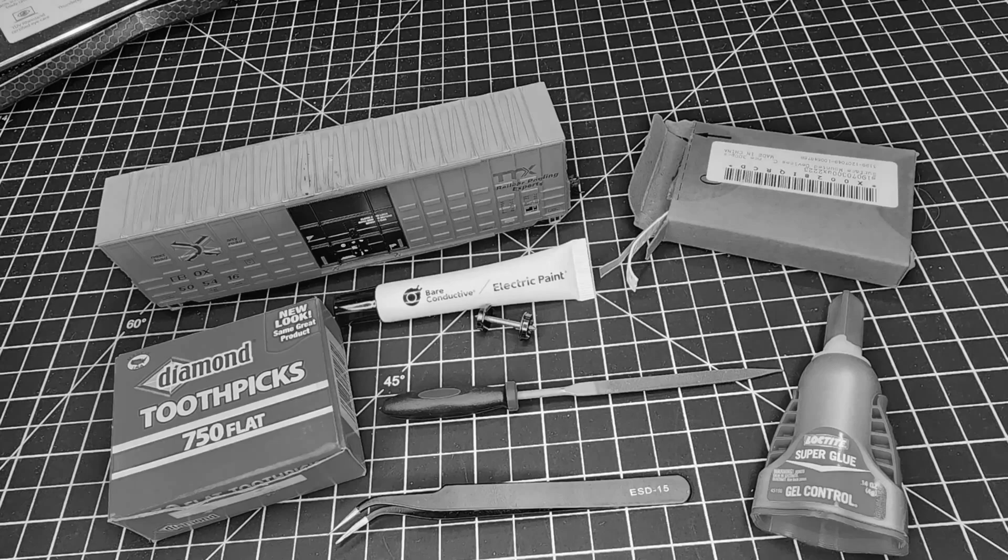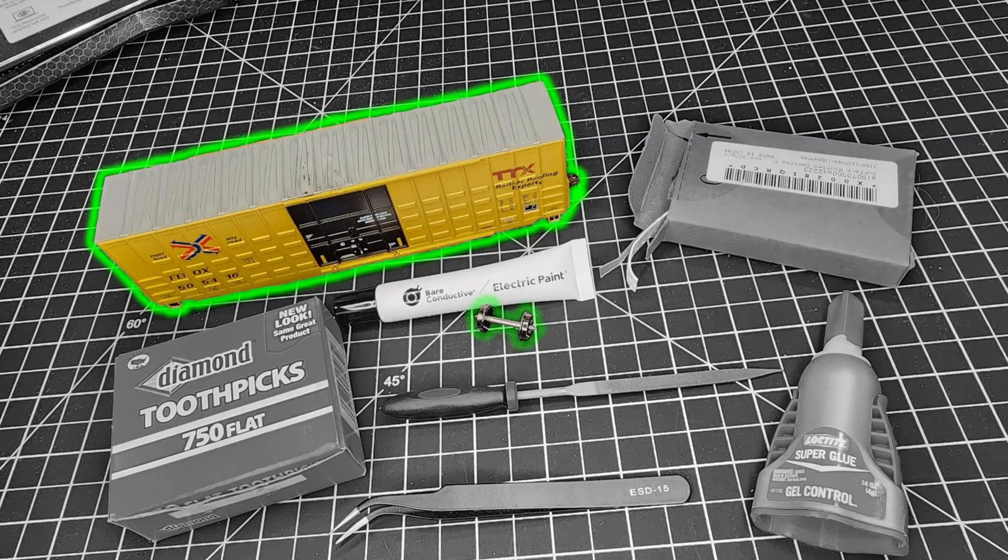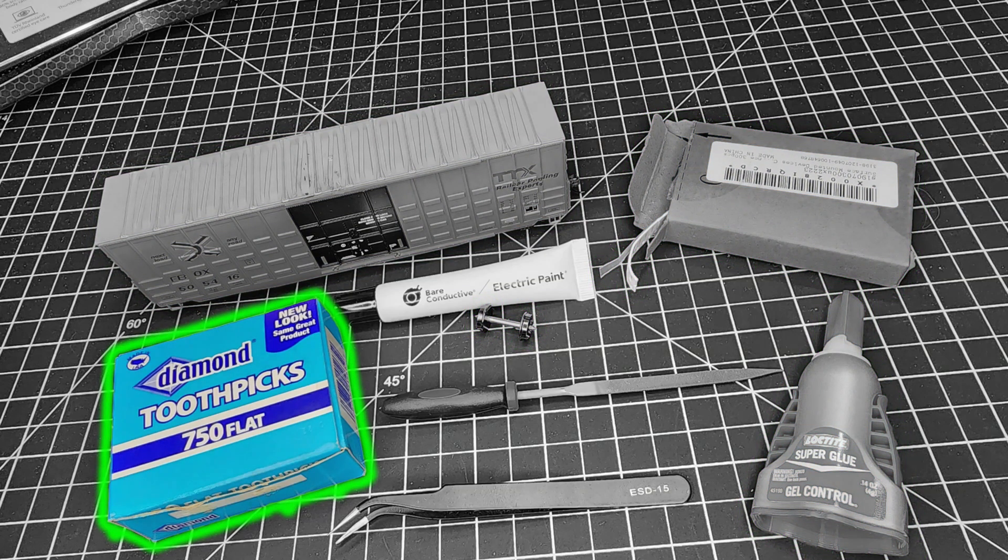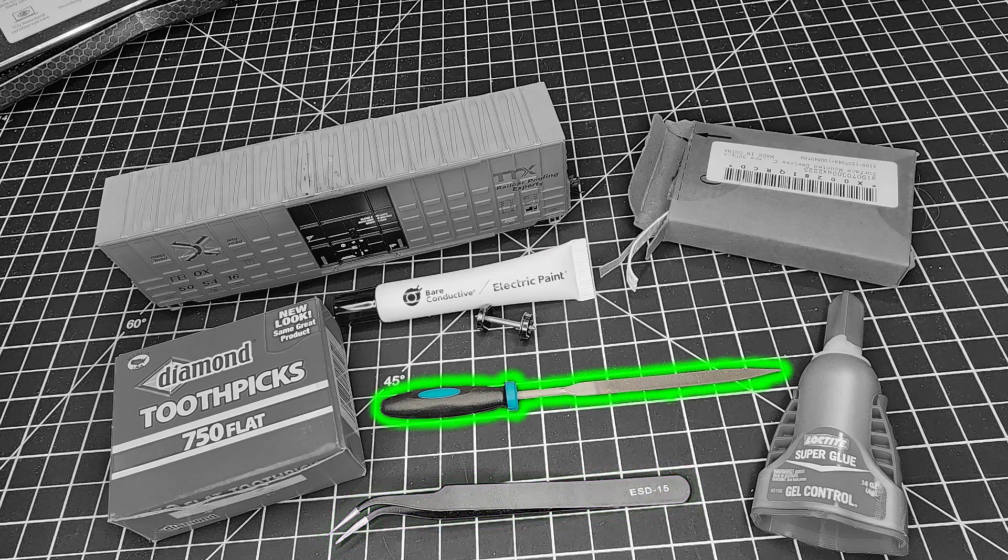On the workbench is everything I'll be using today: rolling stock or an axle with metal wheels, surface mount resistors, super glue, toothpicks, conductive paint, tweezers, and a small hand file.